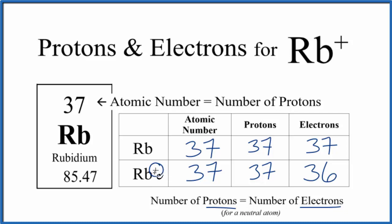If you need help finding the number of neutrons for the different isotopes of rubidium, there's a link in the description to a video to help you do that. This is Dr. B with the number of protons and electrons for Rb+, the rubidium ion. Thanks for watching.